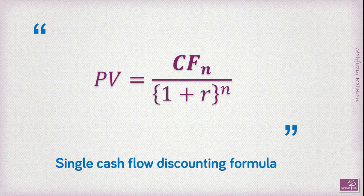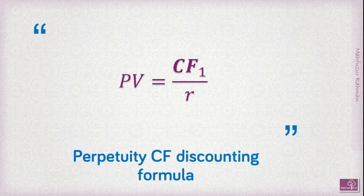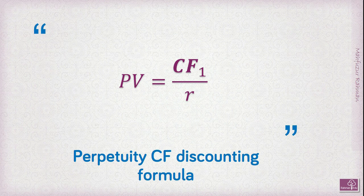In our case, r is the shareholders' required return, alternatively known as cost of equity. Our second formula is the perpetuity formula, where present value equals CF1 divided by r. Once again r is the rate of discounting — the shareholders' required return or cost of equity — and CF1 is the series of cash flows starting from period 1.